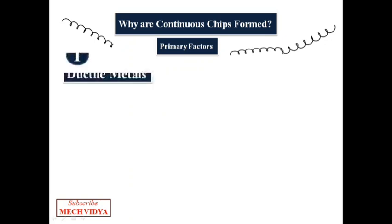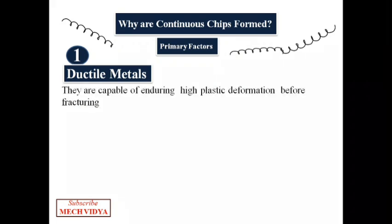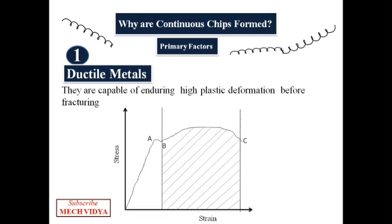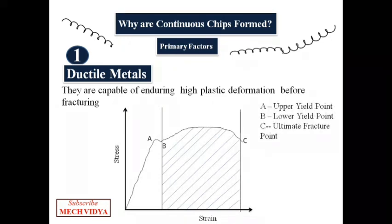Number one, the most important is ductility. Ductile materials can endure high plastic deformation before fracturing. If we see this stress-strain curve, A and B are upper and lower yield points and C is the ultimate fracture point. After C, the material will fail. You can see it has a large plastic region where the material can withstand large amounts of deformation.